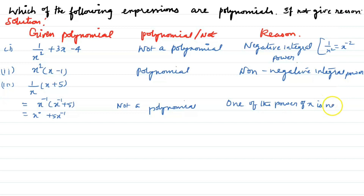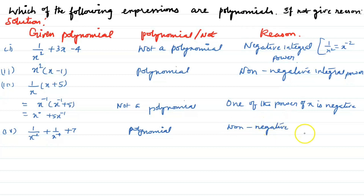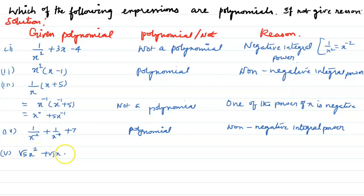Because one of the powers of x is negative. Fourth question: 1/(x to the power of -2) + 1/(x to the power of -1) + 7. This has non-negative integral powers.